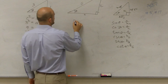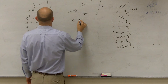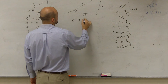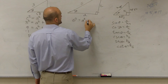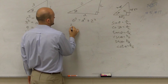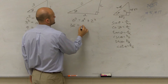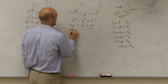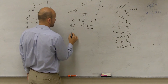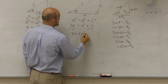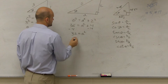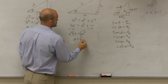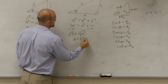Then I do the same thing for the second triangle. I do 6 squared equals a squared plus 2 squared. So I get 36 equals a squared plus 4. Subtracting 4 from both sides, 32 equals a squared, so a equals the square root of 32.